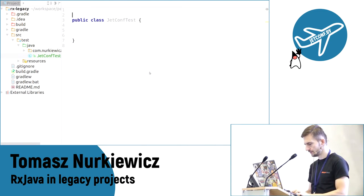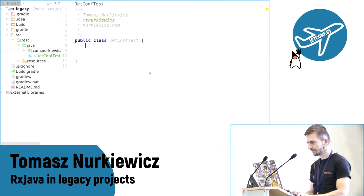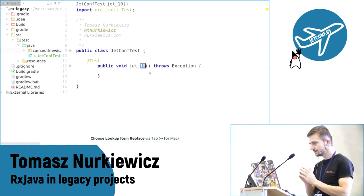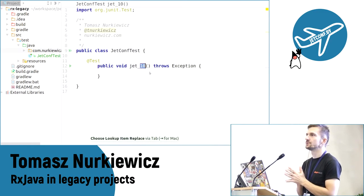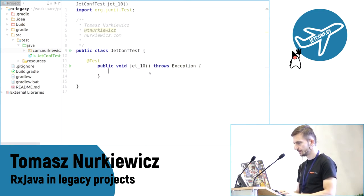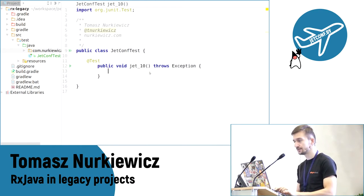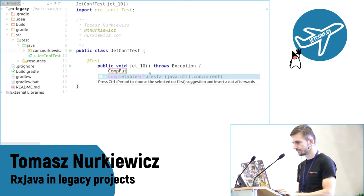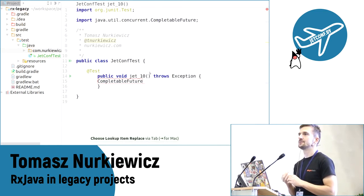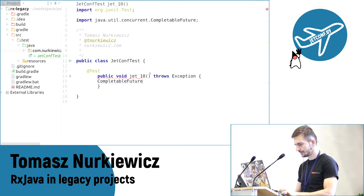My name's Thomas, and you can reach me on Twitter, and I have a website. Let's start from the very beginning. How many of you know what CompletableFuture is from Java 8? And do you know what a Future is — java.util.concurrent.Future? Let's make a very short introduction because it's actually useful from the RxJava perspective. I assume you don't know RxJava as well because it's kind of a higher-level thing.